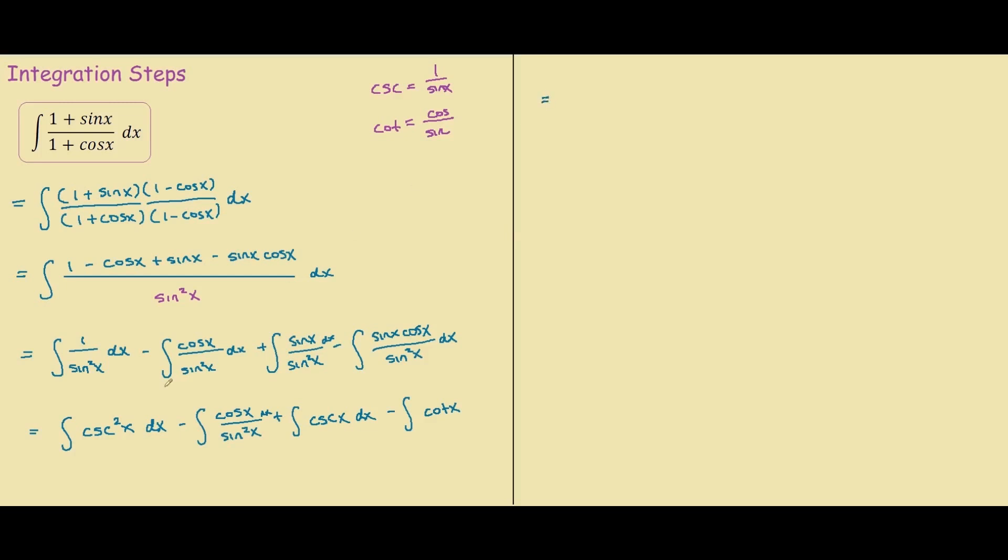So the integral of cosecant squared x is negative cotangent and the next integral I'll rewrite.